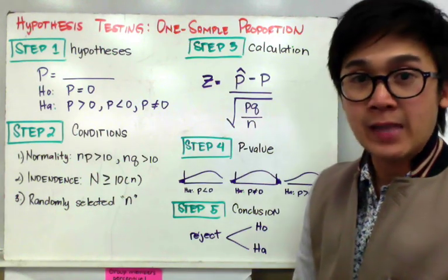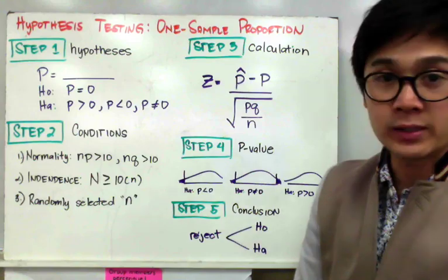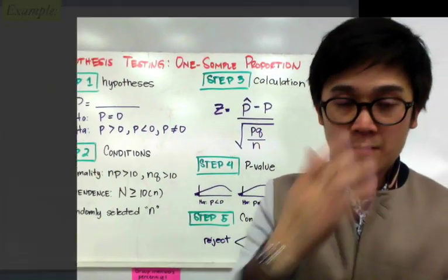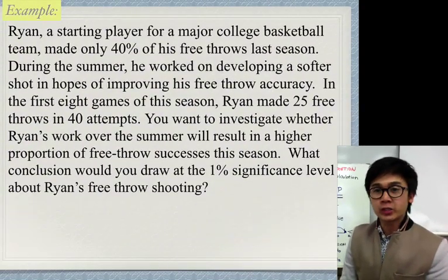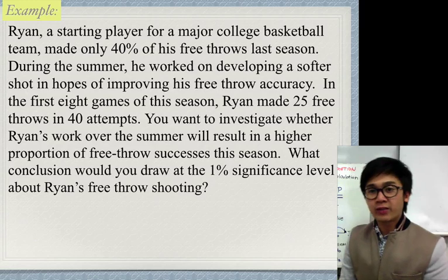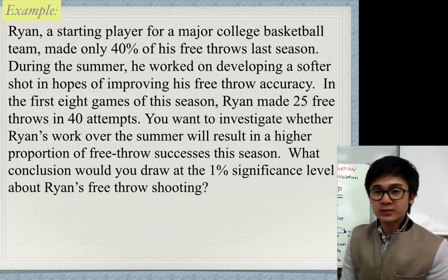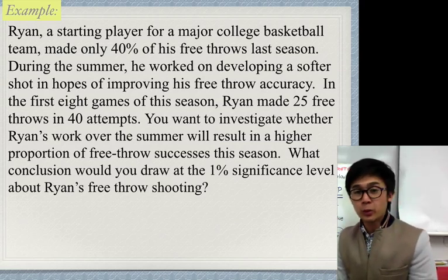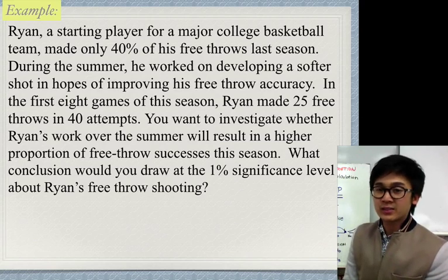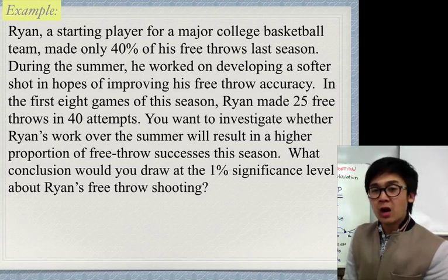Now let's work through our first example. Ryan, a starting player for a major college basketball team, made only 40% of his free throws last season. During the summer, he worked on developing a softer shot to improve his free throw accuracy. In the first eight games of this season, Ryan made 25 free throws in 40 attempts. We want to investigate whether his summer work resulted in a higher proportion of free throw successes, and draw a conclusion at the 1% significance level.